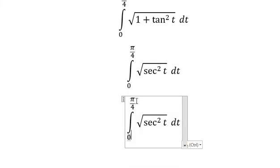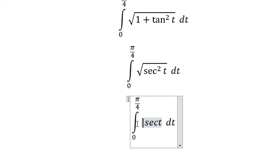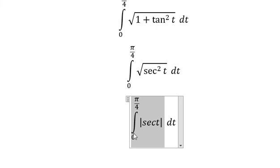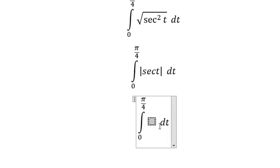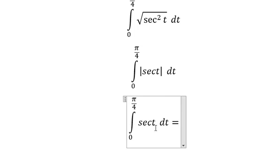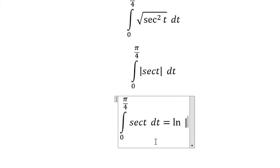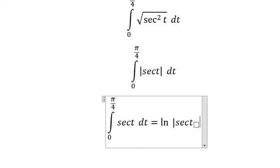The integral is evaluated from 0 to π/4. Since sec(t) is positive on the domain from 0 to π/4, we can drop the absolute value. The integral of sec(t) equals ln of the absolute value of sec(t) plus tan(t).